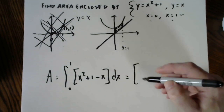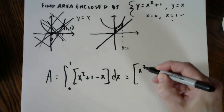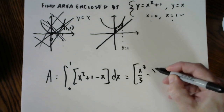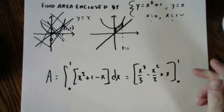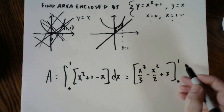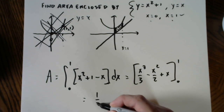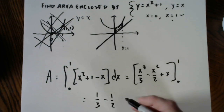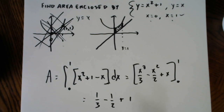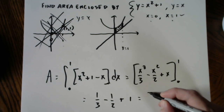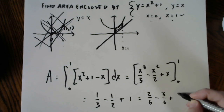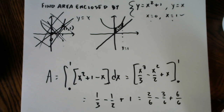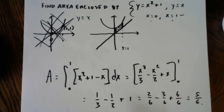Computing the integral of x squared plus 1 minus x from 0 to 1: antiderivative is x cubed over three minus x squared over two plus x. The zero zeros out; plugging in 1 gives one-third minus one-half plus one. Converting to sixths: two-sixths minus three-sixths plus six-sixths equals five-sixths.